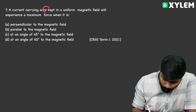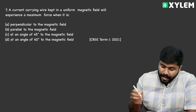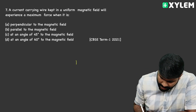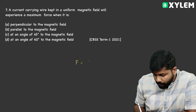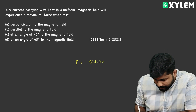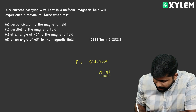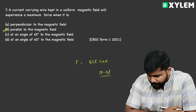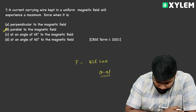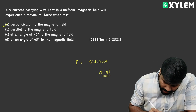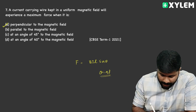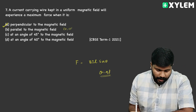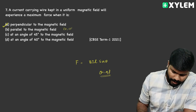A current carrying wire kept in a uniform magnetic field will experience maximum force. The force equation is F equals BIL sin θ. When θ equals 90°, force is maximum. The wire must be perpendicular to the magnetic field — 90° gives maximum force. So the correct answer for the 7th question is Option A — perpendicular to the magnetic field.